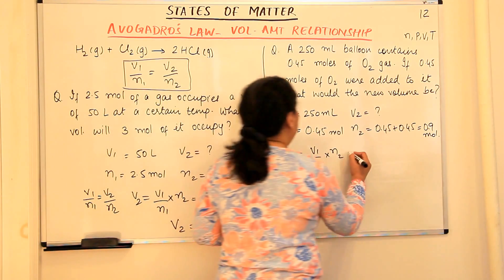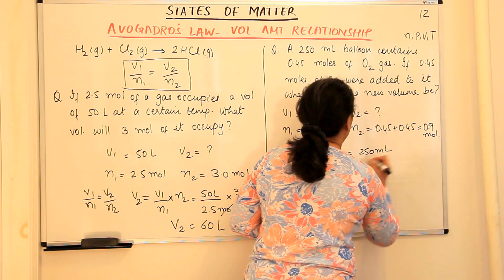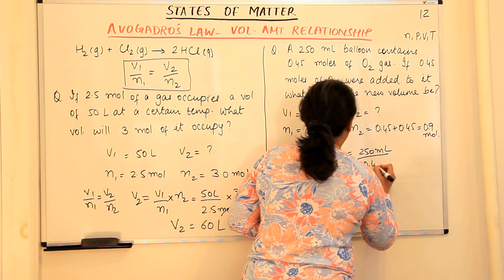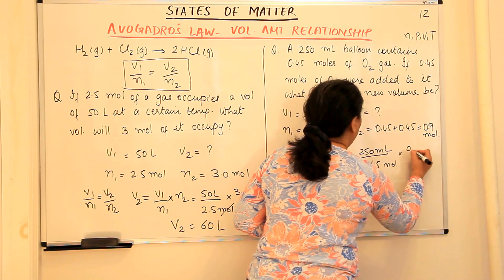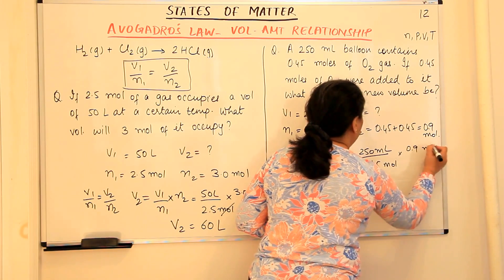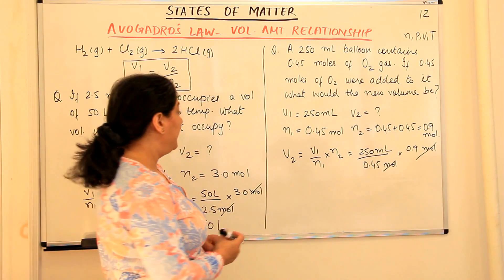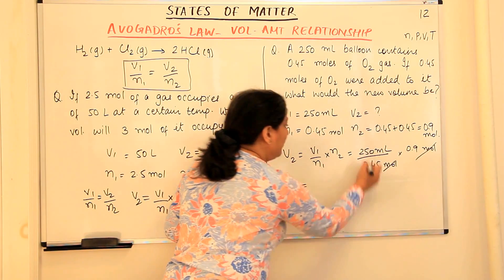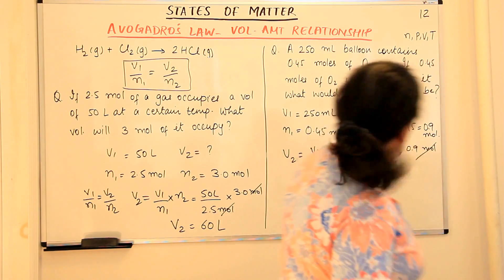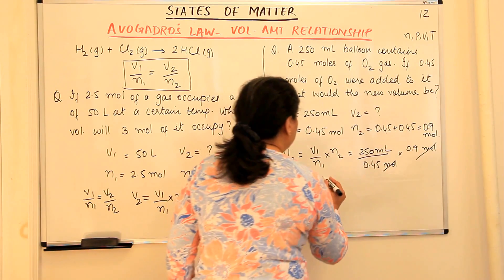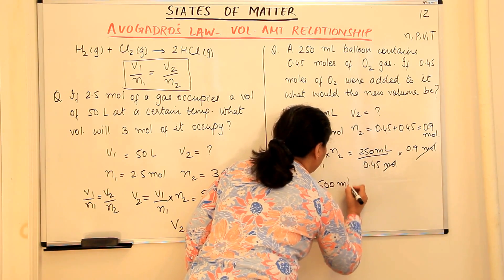Substituting the values: V₂ = (250 ml / 0.45 mol) × 0.9 mol. Mole and mole cancel. Solving 250/0.45 × 0.9, we get 500 ml.